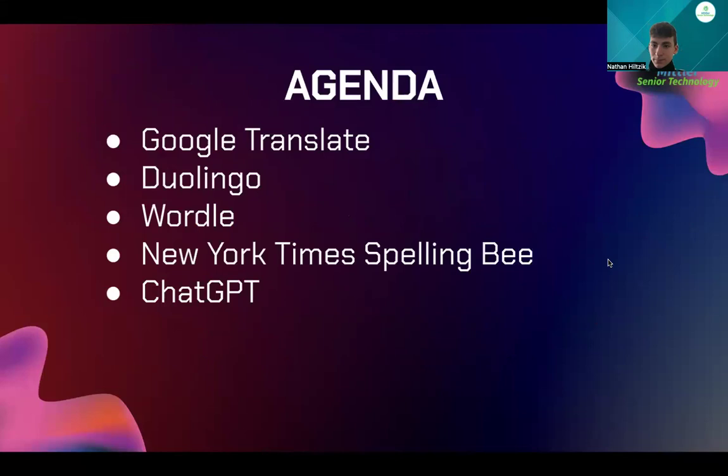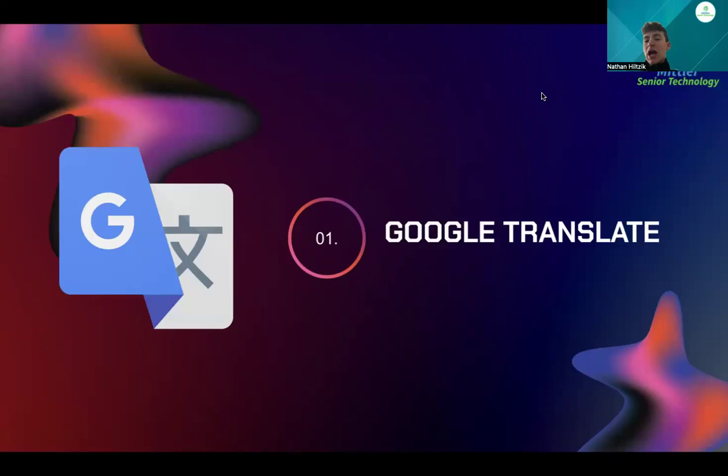So our agenda is language apps. Specifically, we're going to be touching upon Google Translate, which is going to be taught by me, and Duolingo, also taught by me. Then we're going to have Nathaniel Chetrit, one of our very experienced teachers, who is going to be teaching Wordle and the New York Times Spelling Bee. And then Victor Moshe is going to be teaching ChatGPT. And then we'll have a conclusion.